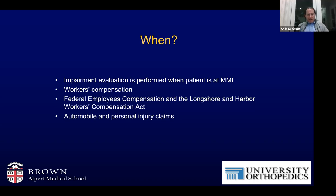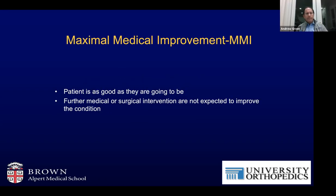When do we do an impairment rating? An impairment evaluation is performed when a patient is at maximum medical improvement — MMI. This is very common in worker's compensation cases, but it also applies to federal employees' compensation, longshoremen and harbor workers' compensation, and automobile and personal injury claims. MMI is the point at which a patient is considered to be as good as they're going to be and no further medical or surgical intervention is expected to improve the condition.